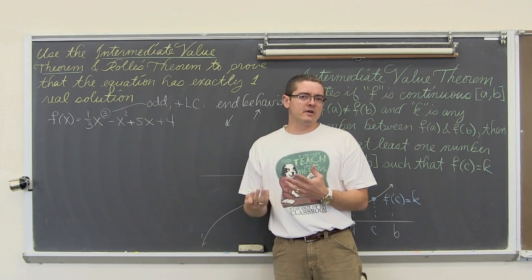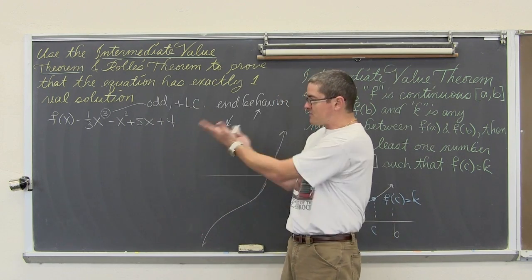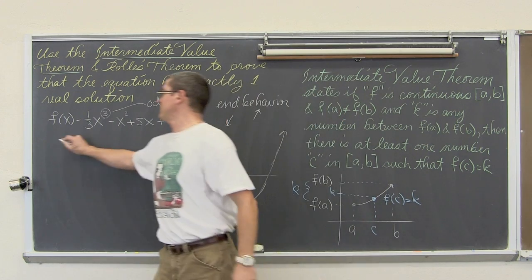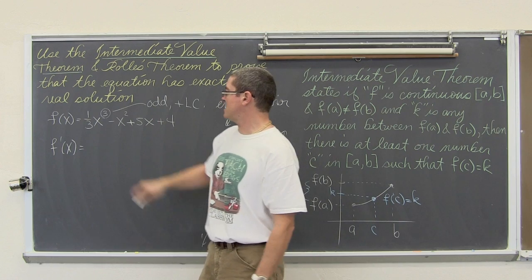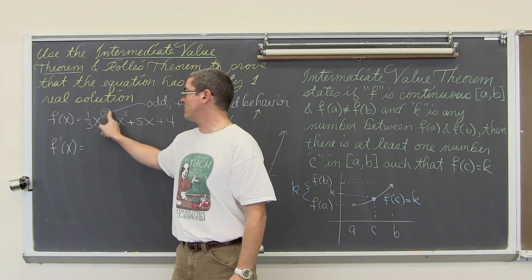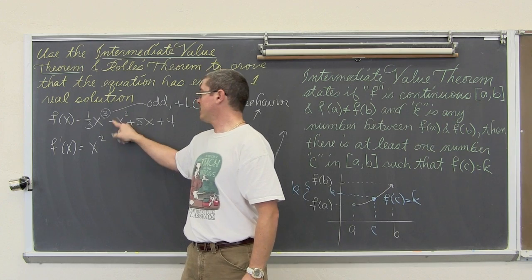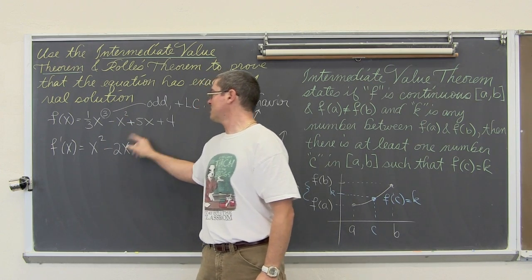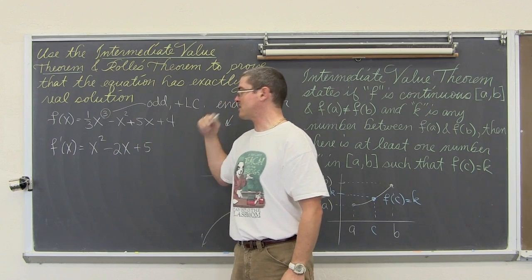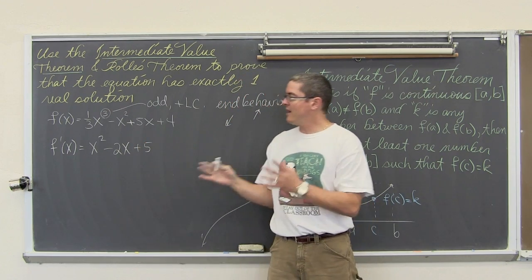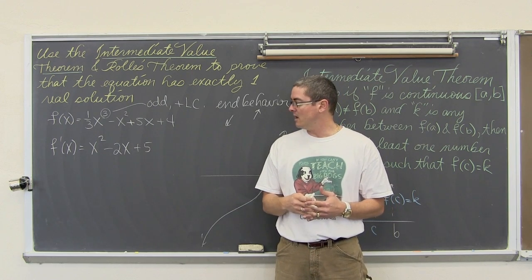Well, Rolle's Theorem talks about the first derivative being equal to zero. f prime of c is equal to zero. So let's start with that. Let's find the derivative of this function. f prime of x, when the derivative of f of x is equal to, let's take this power, bring it down, 3 times 1 third is 1. So we have x squared, bring this power down, minus 2x, and we got the 5, the derivative of 5x is equal to 5. That is a constant, so it is zero. So f prime of x is equal to x squared minus 2x plus 5.